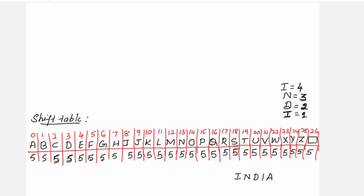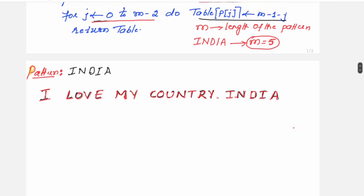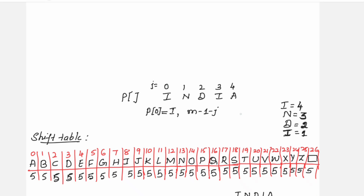This was computed manually. As per the algorithm, the formula is M minus 1 minus J. For J=0, pattern[0] is I, and M-1-0 = 5-1-0 = 4, which matches our manual result. For J=1, pattern[1] is N, and M-1-1 = 5-1-1 = 3, which also matches. So the algorithm gives the same results as the manual computation.